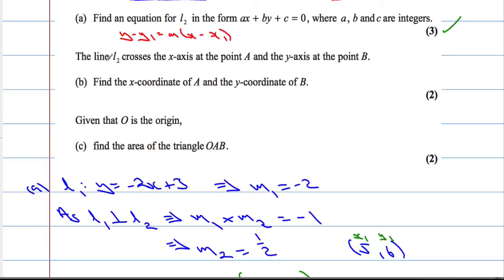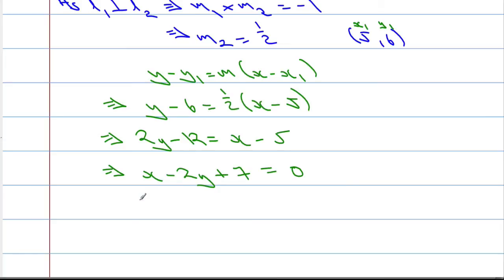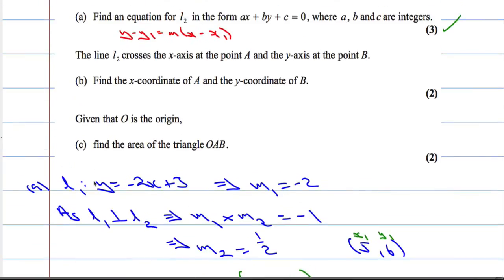The next part says, The line L2 crosses the x-axis at the point A and the y-axis at the point B. Find the coordinates of A and the y-coordinate of B. We're looking at this line L2, and it's asking us to work out the x-intercept and the y-intercept.